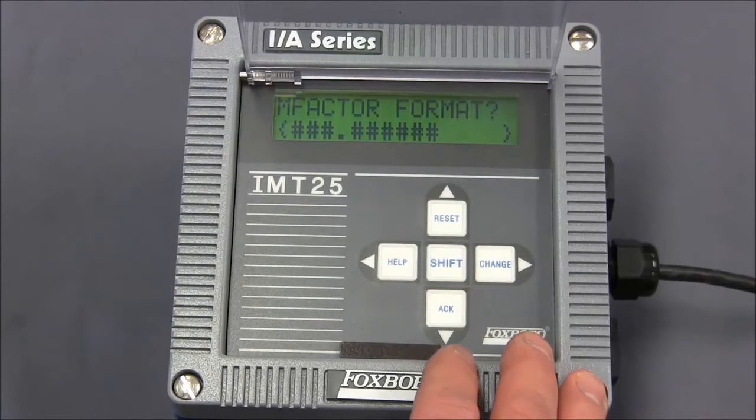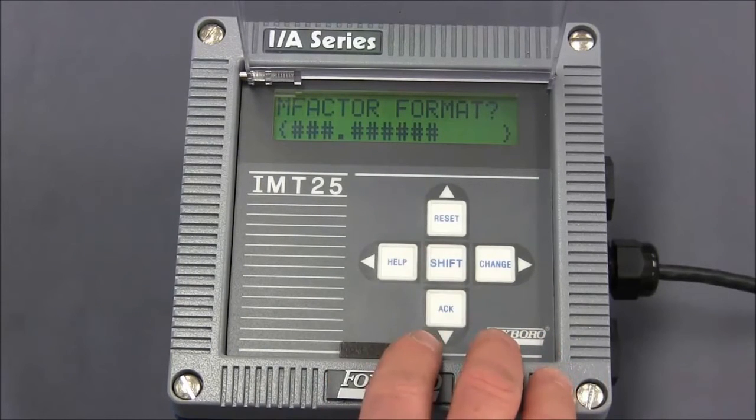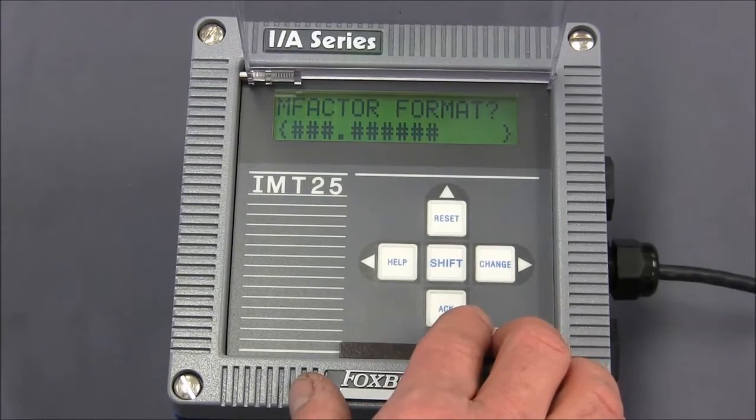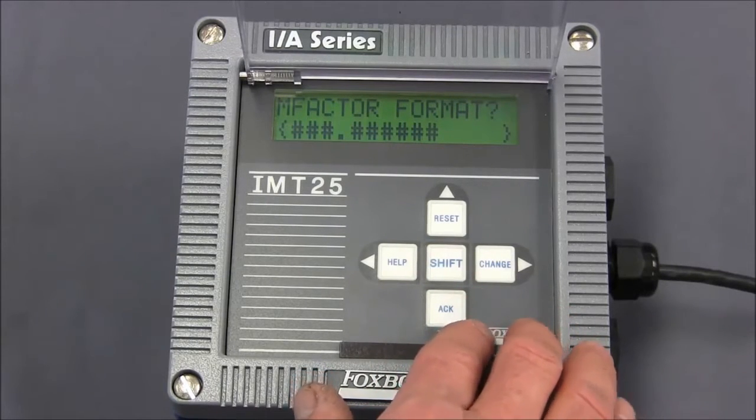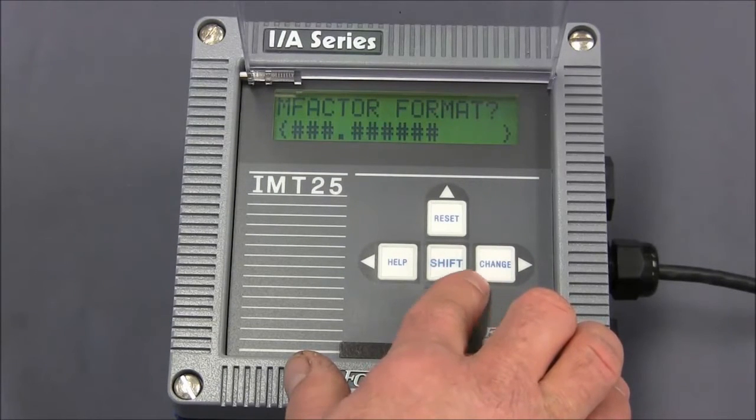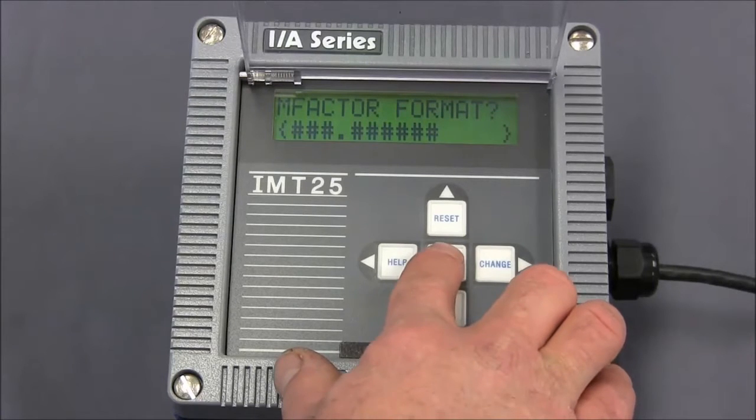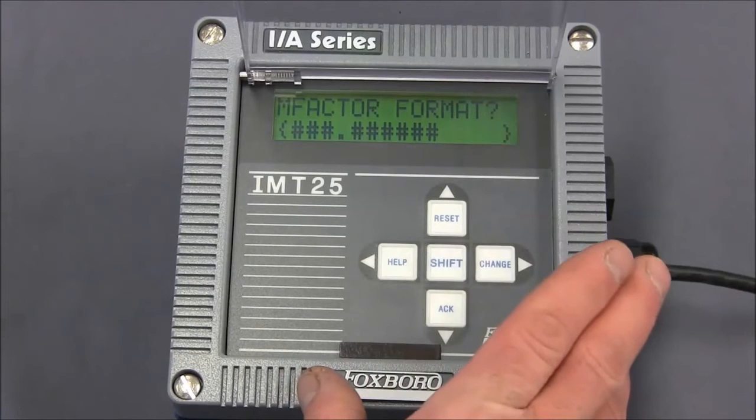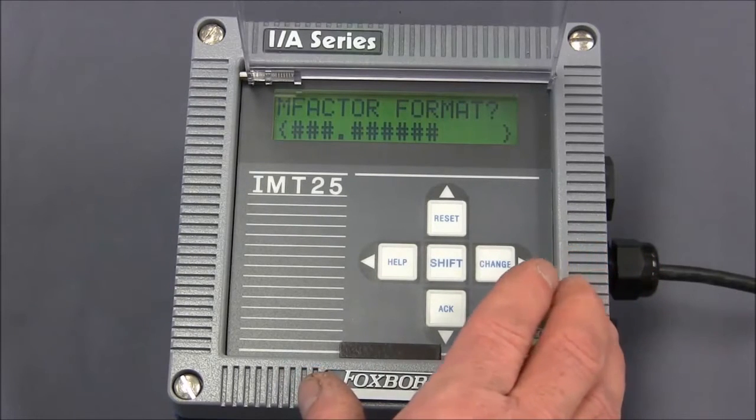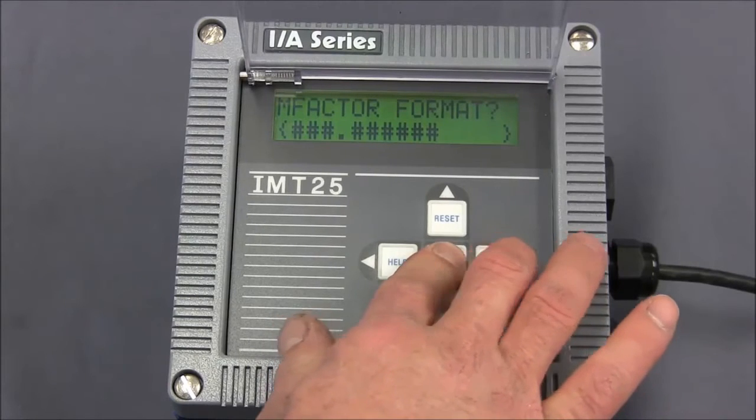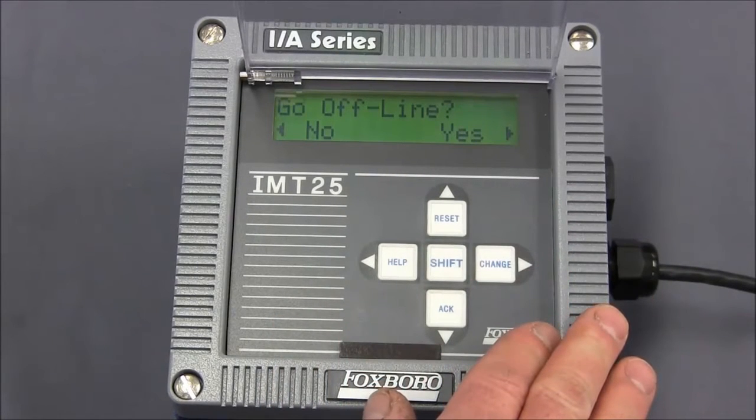To do this, to get the instrument into edit mode, there's a two-button key combination we must hit, and those are the shift key and the change key. I usually recommend pressing and holding the shift key, pressing the change key, and then releasing both buttons together. So we're going to press and hold the shift key, press the change key, and release them both together.